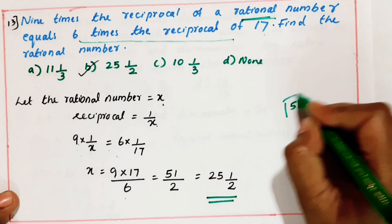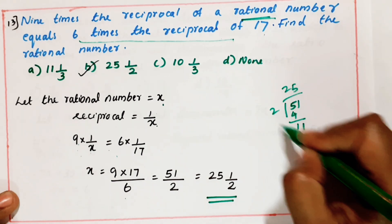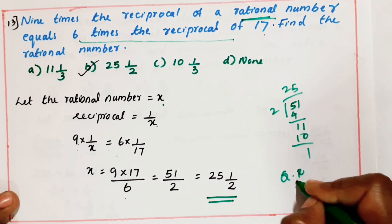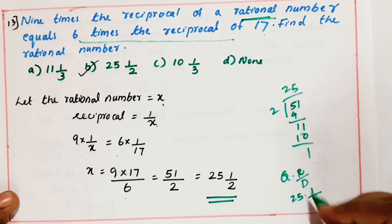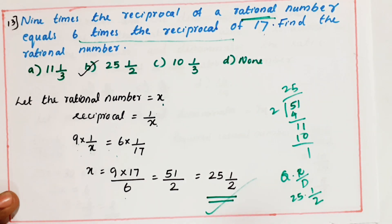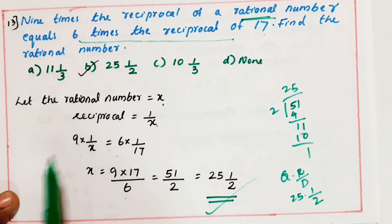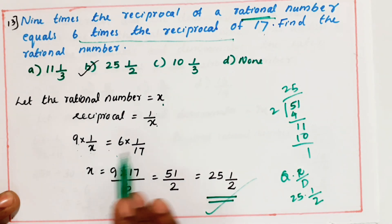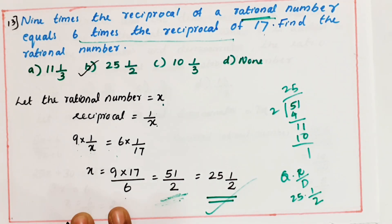We can write 51 by 2 as a mixed fraction. 2 goes into 51: 25 times with remainder 1. How to write the number: quotient, remainder, and divisor. So we write quotient as 25, remainder as 1, divisor as 2. The answer is 25 and 1 by 2. So 9 into 1 by x equals 6 into 1 by 17 — cross multiplication gives us 51 by 2, which we convert to the mixed fraction 25 and 1/2.